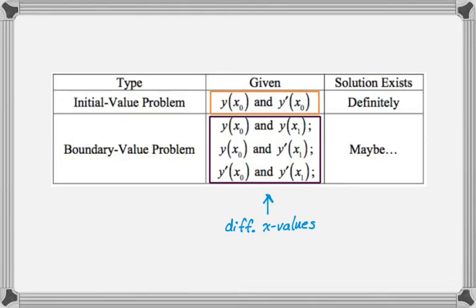You probably did a lot of initial value problems in calculus one and calculus two. Boundary value problems, probably not so much. It's also possible with boundary value problems, since you're just given information about two different x values, you might not actually have enough information to solve for the unknown constants. So that's something to look out for. But with an initial value problem, you'll definitely be able to do it. So let's take a look.